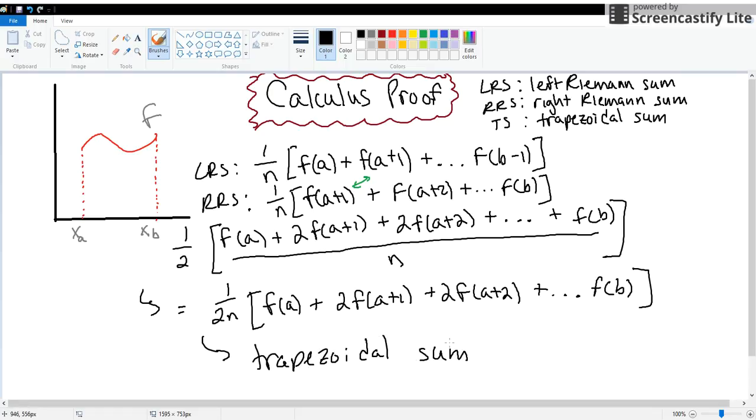So I have now proven that the average of the left and right Riemann sums is equal to the trapezoidal sum of a continuous function. Drop a like or a comment on this video if it helped you out, and I will see you guys in the next one.